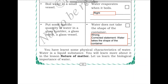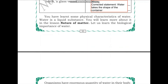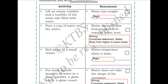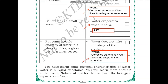The fourth activity says: put some water in a glass tumbler, bottle, or vessel. Water takes the shape of whatever container you put it in — a cup shape in a cup, a bottle shape in a bottle. The statement 'water does not take the shape of the container' is wrong. The corrected statement is: water takes the shape of the container. So we have learned that water has weight, flows from higher to lower levels, evaporates when boiled, and takes the shape of its container.